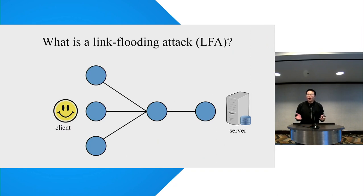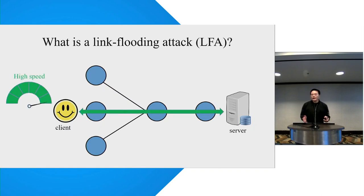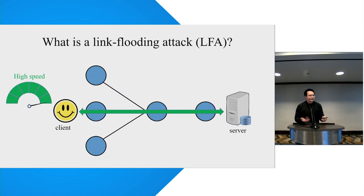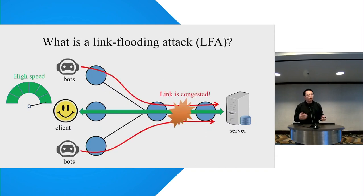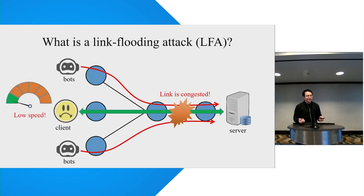First, what is a link flooding attack? Assume a client is using a network — the client and server may transmit data at high speed. Unfortunately, some bots suddenly send high-volume traffic and a link becomes congested. As a result, their transmission speed is reduced repeatedly. We say a link flooding attack happens.